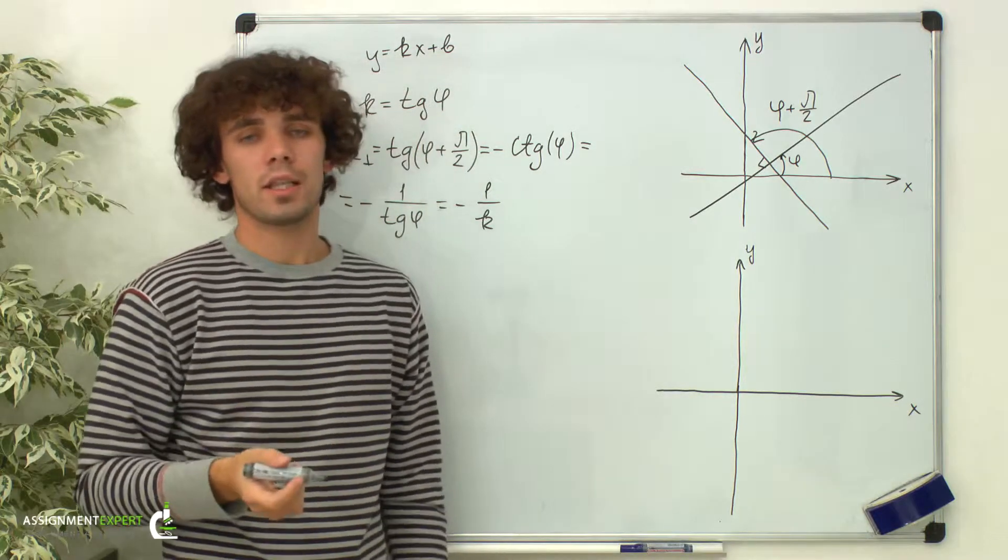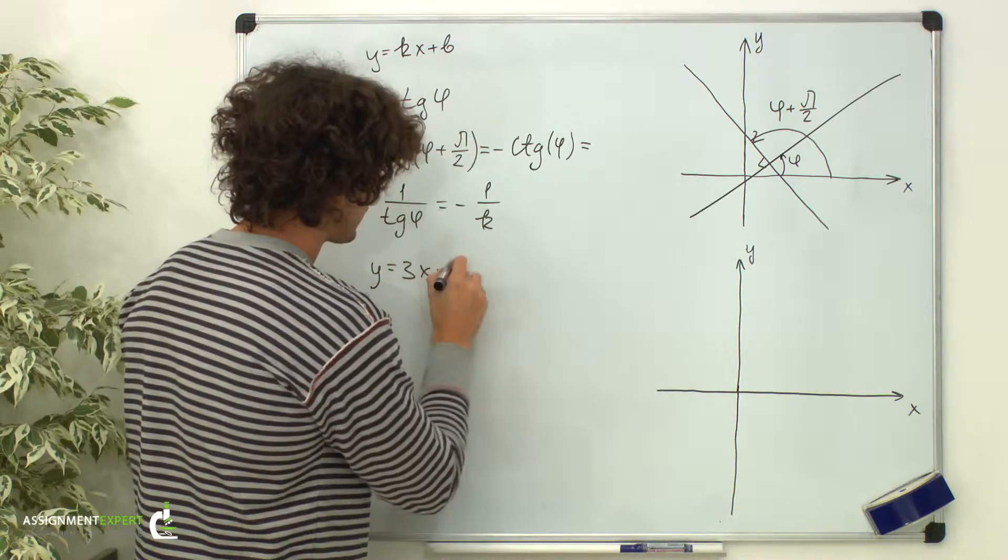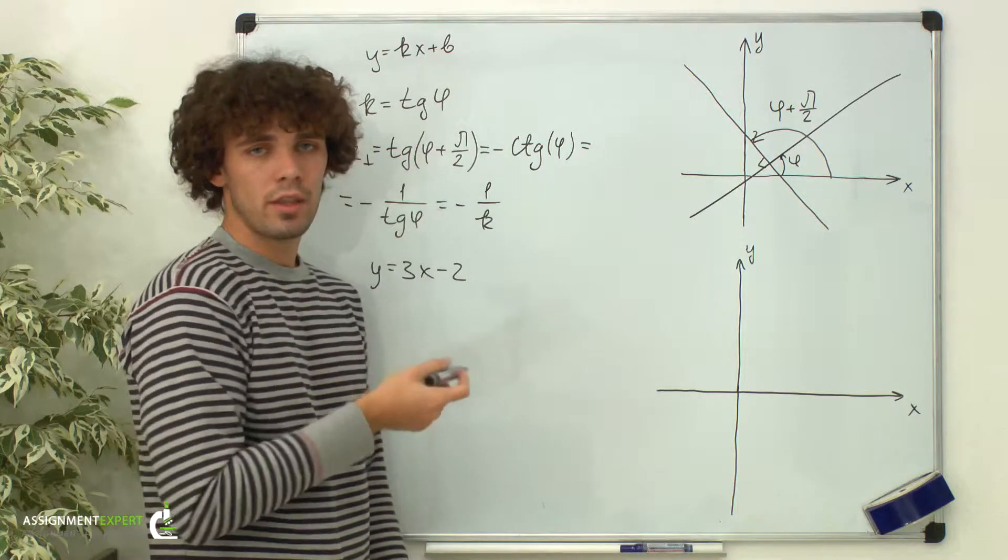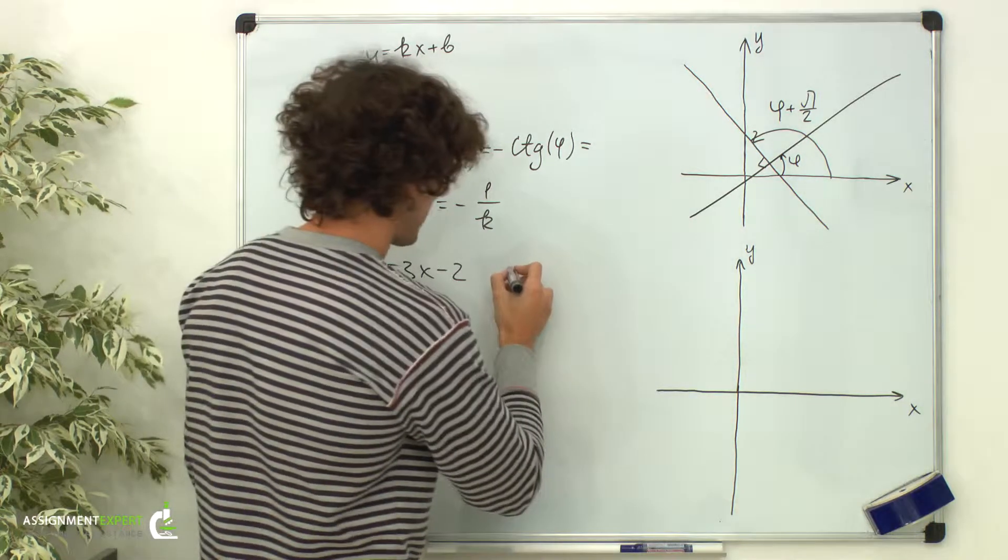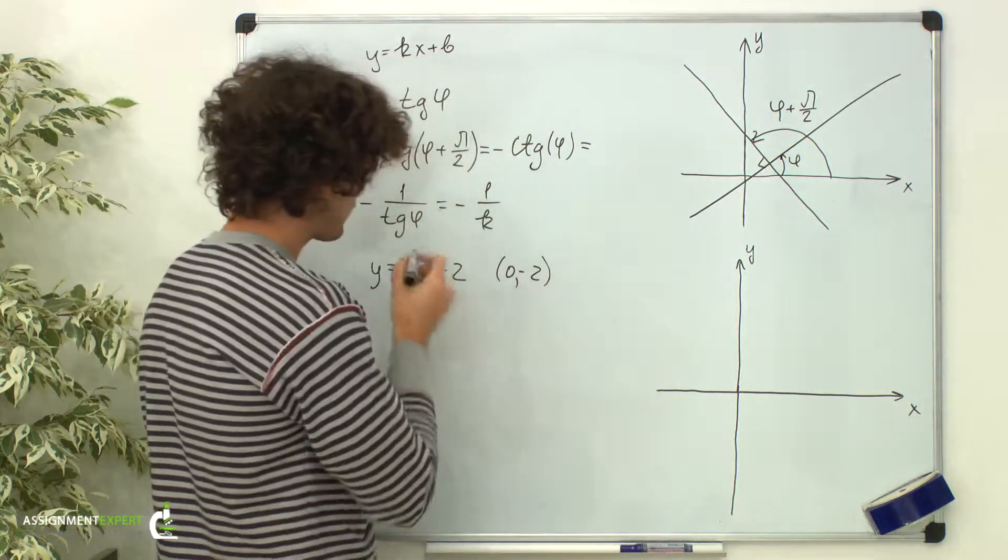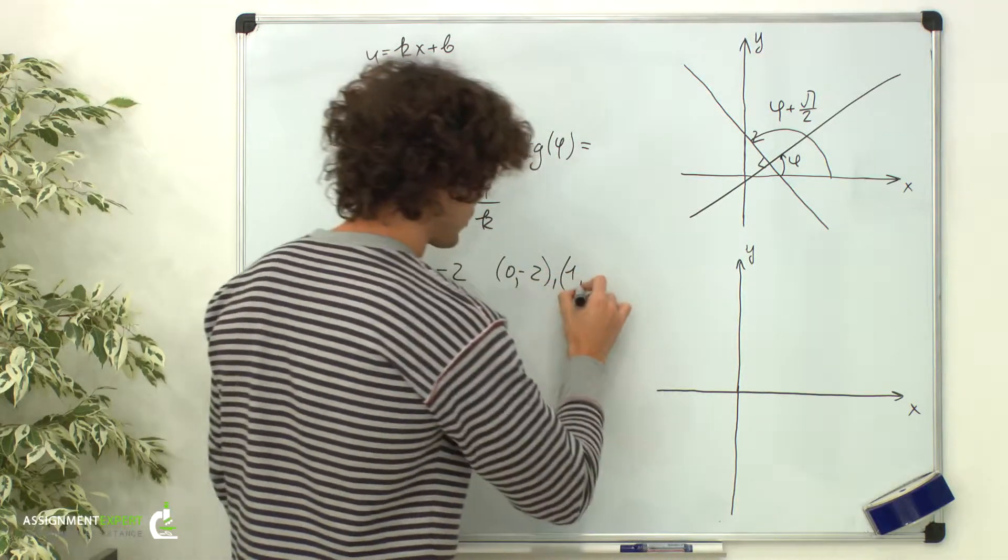For example, let's consider equation y equals 3x minus 2. We need to take two points to build the line represented by this equation. Let's take x equals 0, then y equals negative 2, and x equals 1, then y also equals 1.